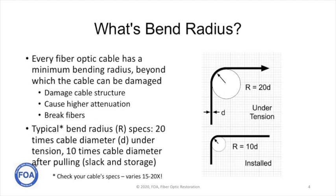While all fiber optic cables are flexible, there is a maximum amount they can be bent before you can do damage to the cable structure, cause higher attenuation in the fibers, or even break fibers. That specification is generally called the minimum bending radius. The typical bend radius, which we call R in this diagram, is specified as 20 times the cable diameter (shown as little d in the diagram) when the cable is under tension, and 10 times the cable diameter after pulling — for example, when you store slack in a handhold or in service loops.